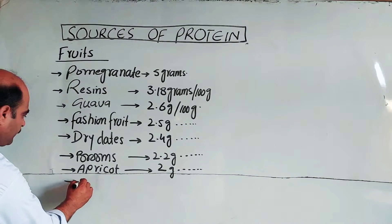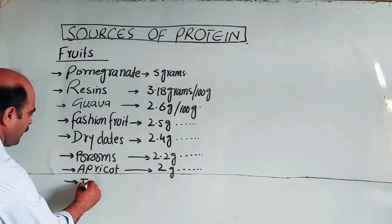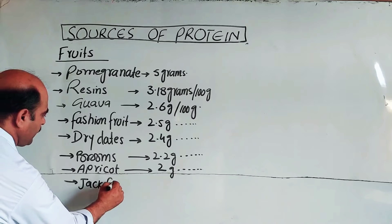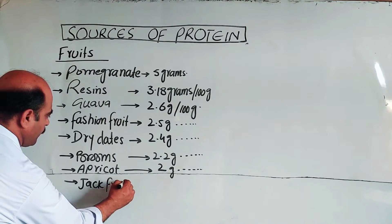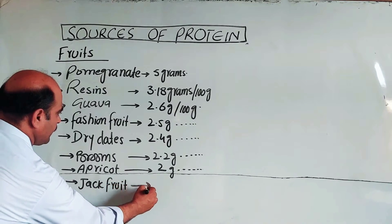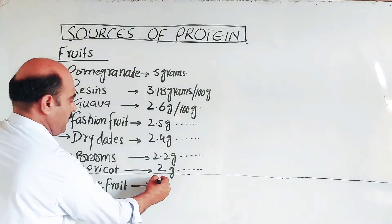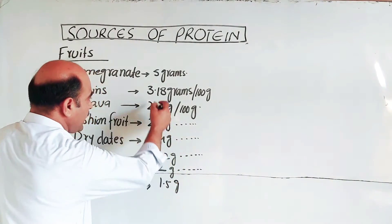Jackfruit contains 1.5 grams of protein per 100 grams.